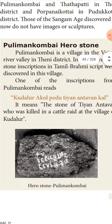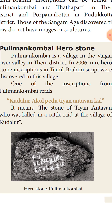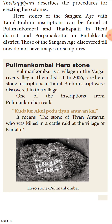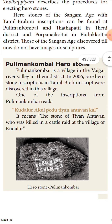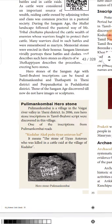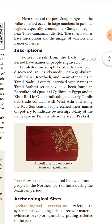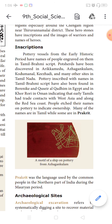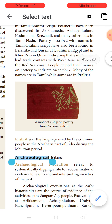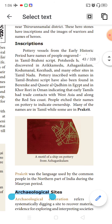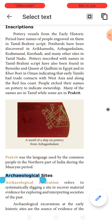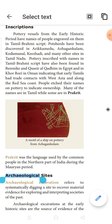The Tamil Brahmi inscriptions were found in almost 30 sites in Tamil Nadu. These inscriptions were found in rock shelters and caves. In those days, monks used to meditate and perform tapas inside caves. Many kings patronized these monks and saints, making the caves a better place of residence for them. Monks led a very simple life with few desires.